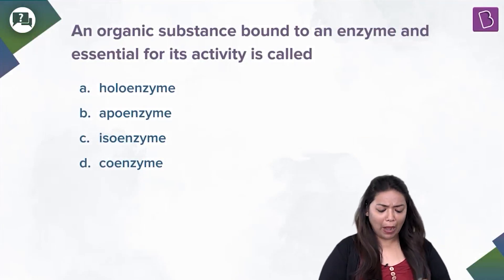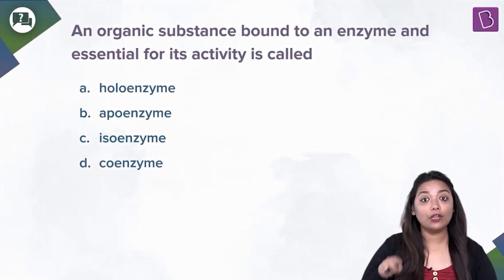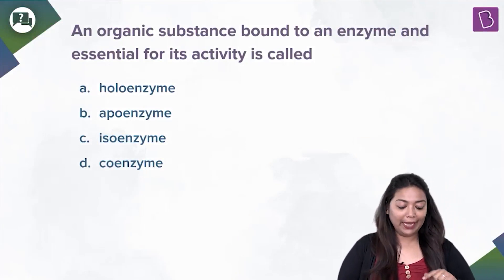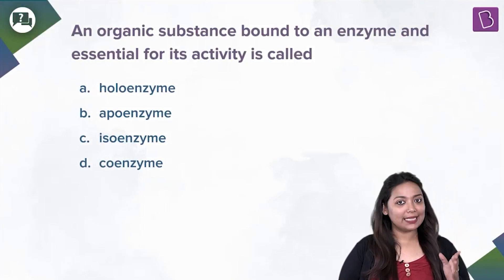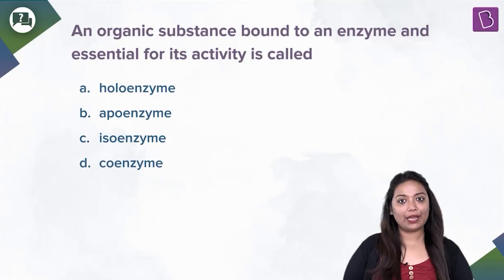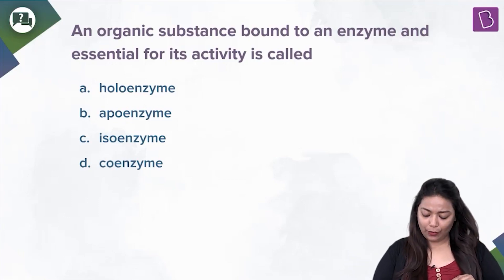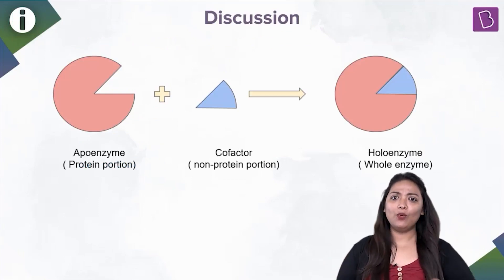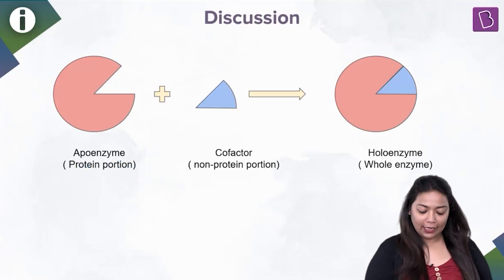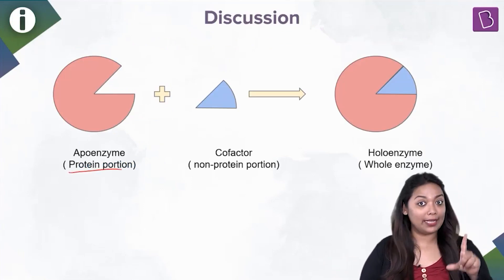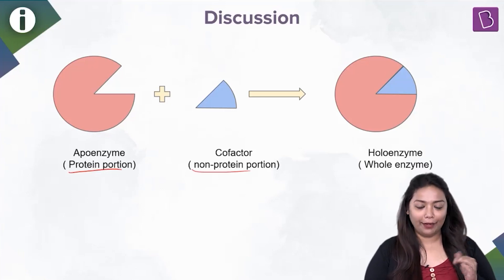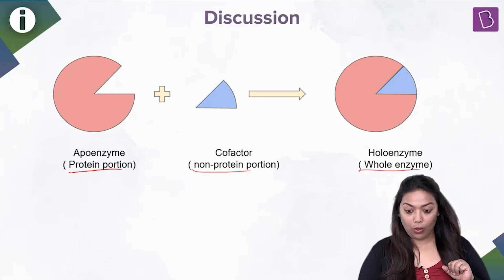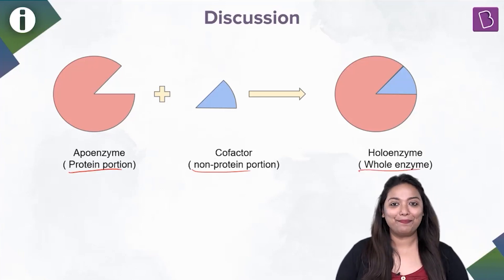An organic substance bound to an enzyme and essential for its activity is called: A. Holoenzyme, B. Apoenzyme, C. Isoenzyme, or D. Coenzyme. When you look at this structure, you're looking at two parts making one — a protein portion which we call apoenzyme, and a non-protein portion which we call cofactor. Together, you get a whole enzyme: the holoenzyme.